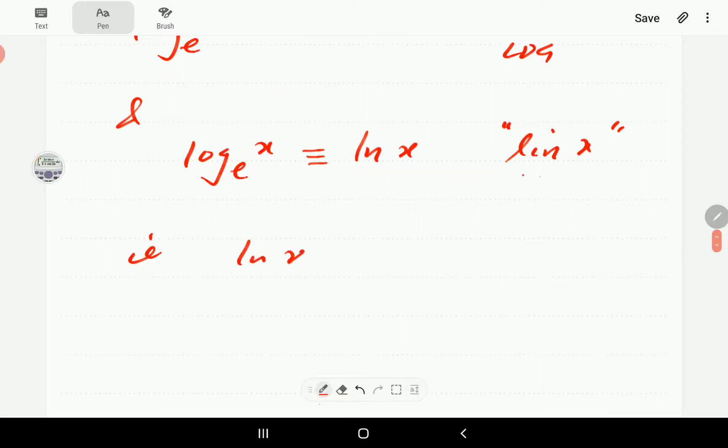If ln x is equal to p, then as soon as you see ln here, the base is e. So that means e to the power p is equal to x, if you want to write it in terms of an exponential form.